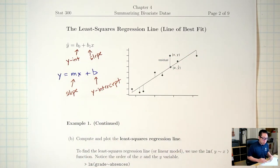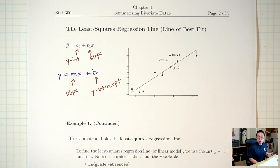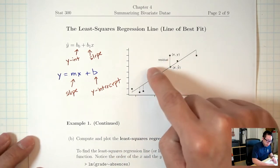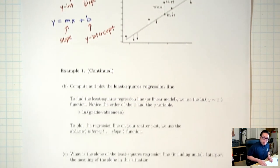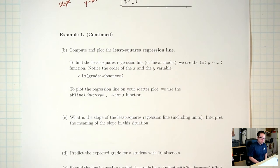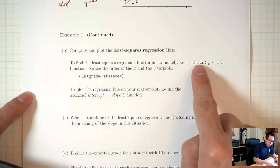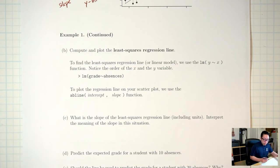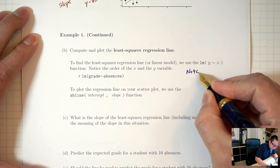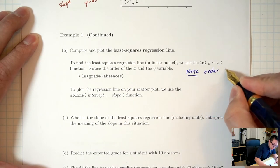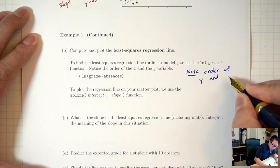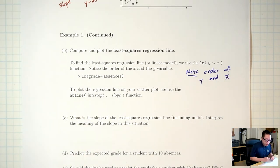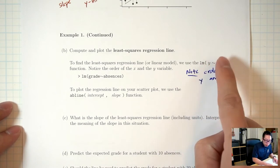We're not going to find the equation by hand; we'll use R. If you're interested, it's an optimization problem from calculus 3 or linear algebra — you're finding the line that minimizes all the distances. In R, the command for the least squares regression line is lm(), with Y tilde X. Notice that Y goes first — if you get the order wrong, you'll get the wrong answer.